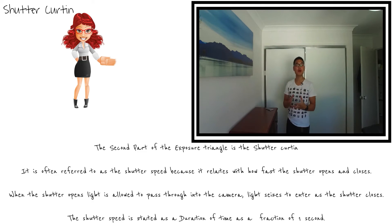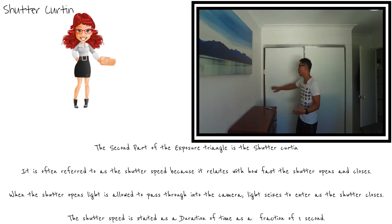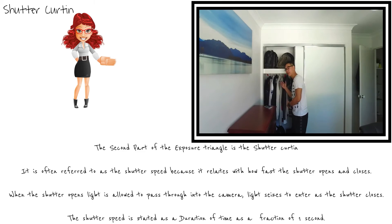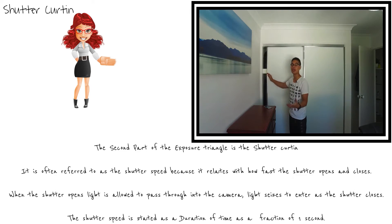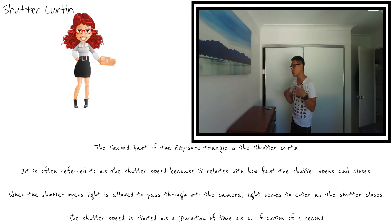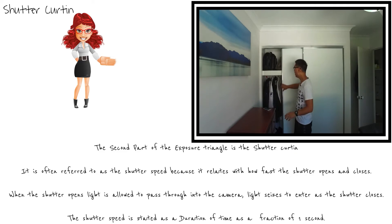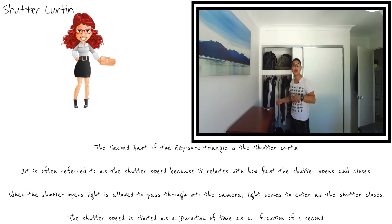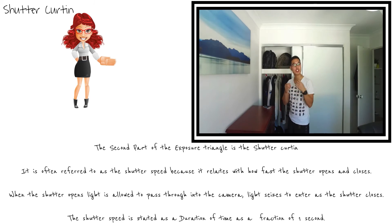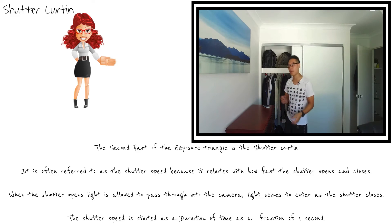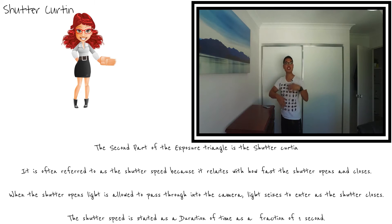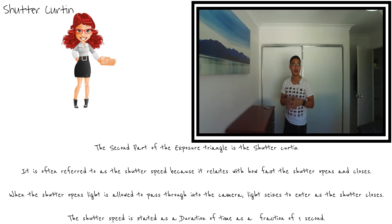The shutter curtain is basically a set of doors which open to allow light to pass through. As the shutter is open, light is allowed to fall onto the digital sensor, and then it closes to stop light from making contact with the sensor. We as photographers can adjust the time for how long the shutter remains open — the longer the shutter remains open, the more light falls onto the sensor; the shorter the time, the less light passes through.